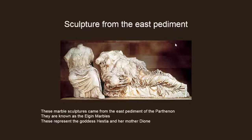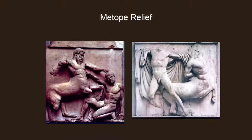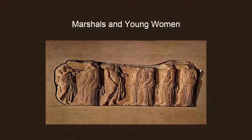These marble sculptures came from the east pediment of the Parthenon — they're known as the Elgin Marbles, and there's a long story about their current location, which Stokstad likely discusses. They represent the goddess Hestia and her mother Dione. Earlier when we looked at the Korai figures I talked about the drapery and how important it was to the Greeks — this sculpture is now articulating the beauty of the female form underneath the drapery, an expression absent in the earlier sculptures. Here's a metope relief from the Parthenon showing the Centaurs and Lapiths.